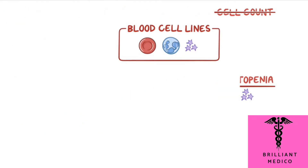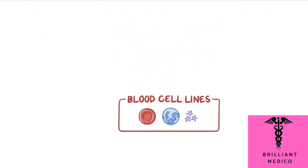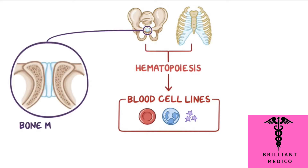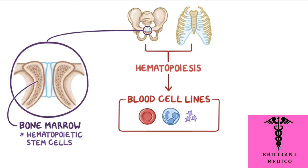Red blood cells are produced in the bones of the body, mainly in the bones of the pelvis, ribs, and sternum, through a process called hematopoiesis. This process starts in the bone marrow, the innermost portion of the bone, where the hematopoietic stem cells reside. These serve as progenitor cells for all the different cell types found in the blood.